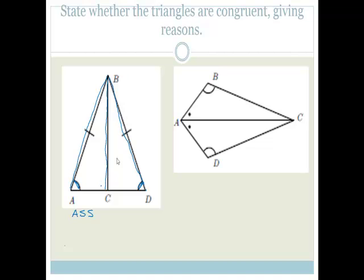Is angle, side, side congruent? The things that are congruent are: right angle, hypotenuse, side; side, side, side; side, angle, side; and angle, side, angle. Angle, side, side does not fall into any of those, so this is not congruent.